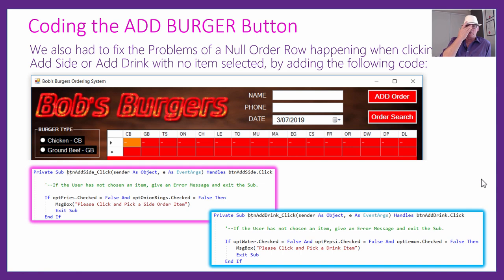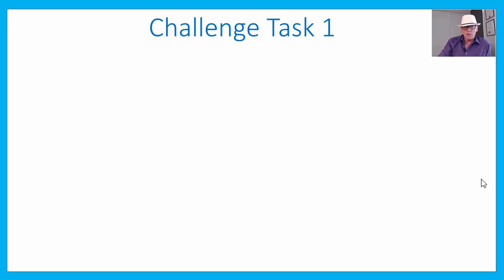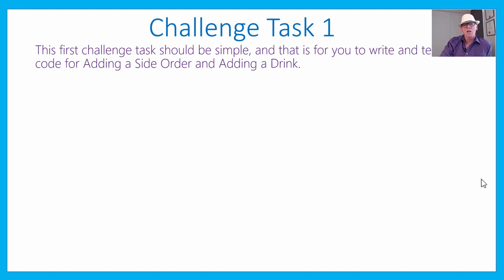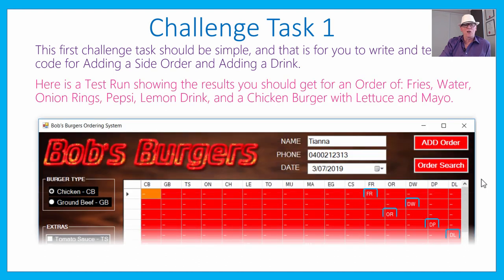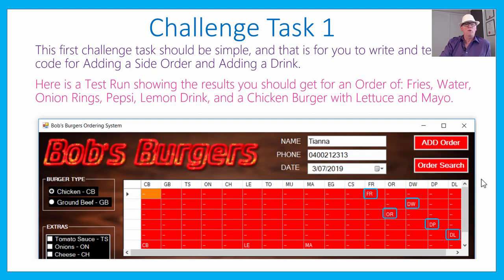You always need to be doing thorough testing step by step, thinking of all the 'Homer Simpson' kinds of things people can do on forms. Make sure you've got everything covered. That leads us to challenge task one — we're going to challenge you because you've done a lot of programs. We just showed you how to do the burger order, so it should be simple for you to code up the side order and drink functionality using similar coding to what we did for the burger.